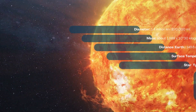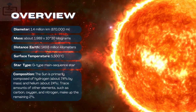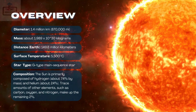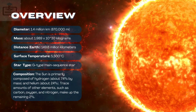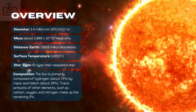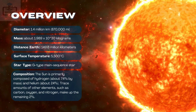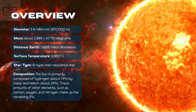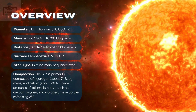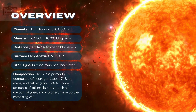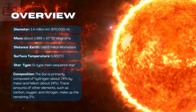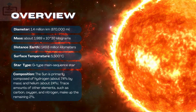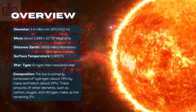The Sun, the heart of the solar system. Overview: Diameter — 1.4 million kilometers (870,000 miles). Mass — about 1.989 × 10^30 kilograms. Distance from Earth — 149.6 million kilometers. Surface temperature — 5,500 degrees Celsius. Star type — G-type main sequence star.